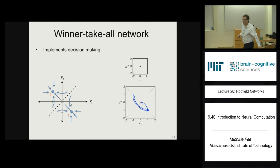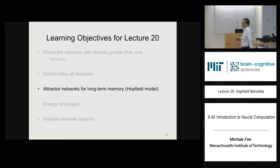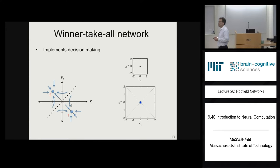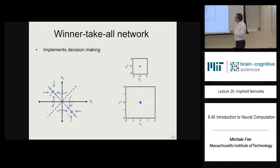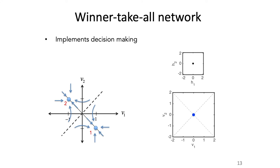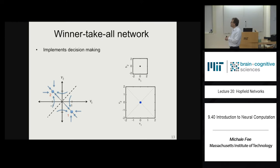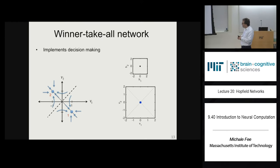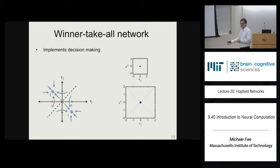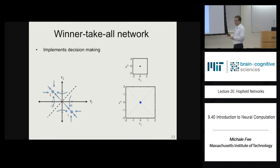A student asks about the basin of attraction. Each half-plane is the basin of attraction for the corresponding attractor — if you start the network anywhere in that half-plane, it will evolve toward that attractor. You can use this as a winner-take-all decision-making network: start the network at zero, and small kicks in either direction cause the network to relax into one of the attractors and maintain that memory.